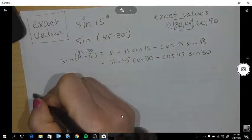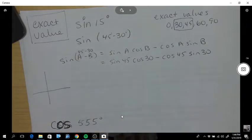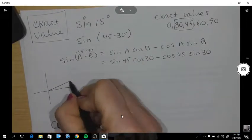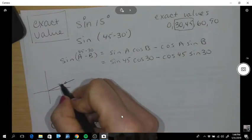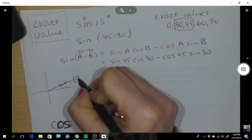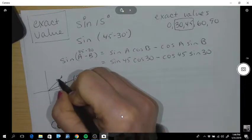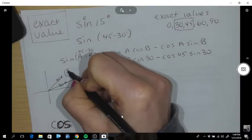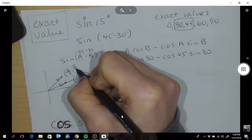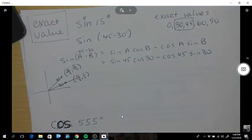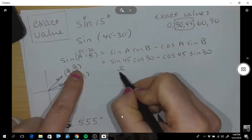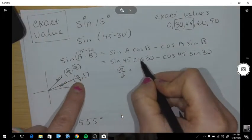Now you need to understand your coordinates. At 30 degrees my coordinate is root 3 over 2, 1 half, and at 45 degrees my coordinate is root 2 over 2, root 2 over 2.